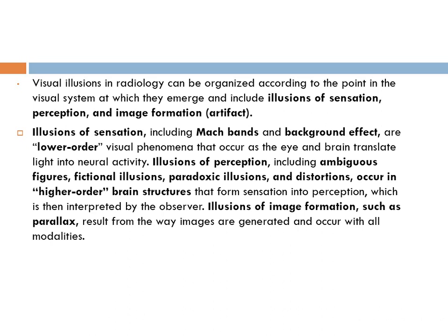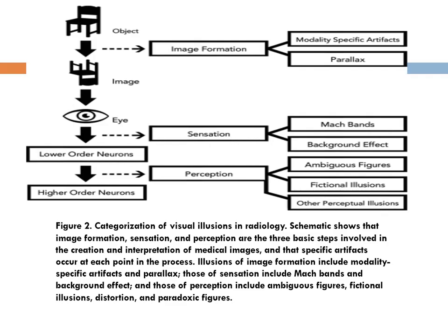Visual illusions are categorized according to the point they emerge into three categories: illusion of sensation, perception, or image formation. In image formation we have modality-specific artifacts, parallax, and others. When stimuli come to the eye and are converted into neural activity, it's sensation — like the Mach band background effect. Then in higher-order neurons we have perception, including ambiguous figures, fictional illusion, and other perceptual illusions. We'll go through it step by step.